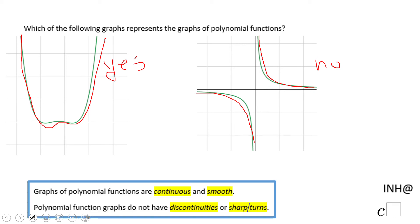That's the main thing you need to look for in a polynomial function. It needs to be continuous and smooth, not sharp turns, no discontinuity like you see in this case.